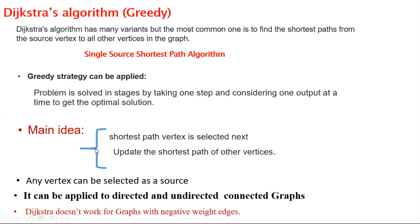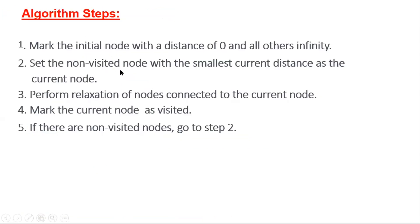Where one or more edges have negative weight. Here are the algorithm steps: we initialize the distance of the selected initial node to zero and all others to infinity. Next, we set the non-visited node with the smallest distance as the current node. We perform relaxation of nodes connected to the current node, mark the current node as visited, and repeat steps two to four until all nodes are visited.